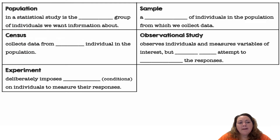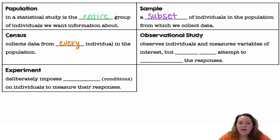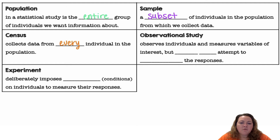Population in a statistical study is the entire group of individuals we want information about. A sample is a subset of individuals in the population from which we actually collect the data. A census collects data from every individual in the population. These are usually very time-consuming and expensive to do, so we don't do too many unless you have a really small population.